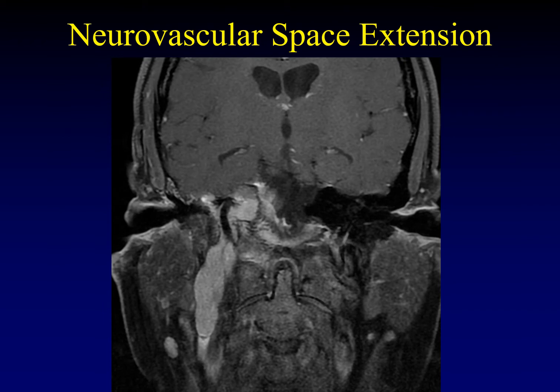Remember that meningiomas like to be transosseous. A meningioma that starts within the intracranial vault will often spread through the bone and extend down into surrounding structures. We see this with meningiomas of the orbital apex extending along the second cranial nerve as nerve sheath meningiomas. We also see it with jugular bulb meningiomas that extend down into the neck along the neurovascular space — in this case, all of this is meningioma extending 10 centimeters below the skull base, tracking along the neurovascular bundle into the neck.